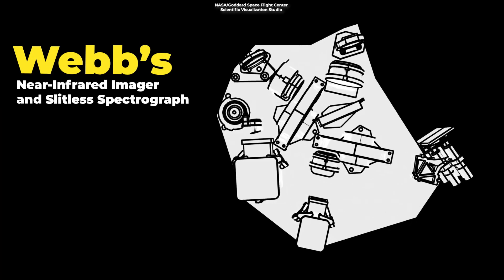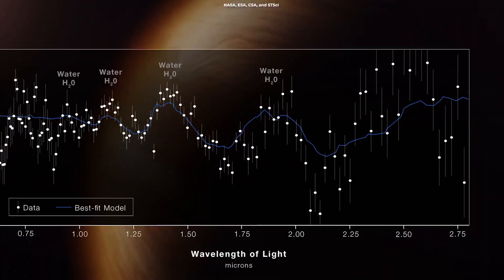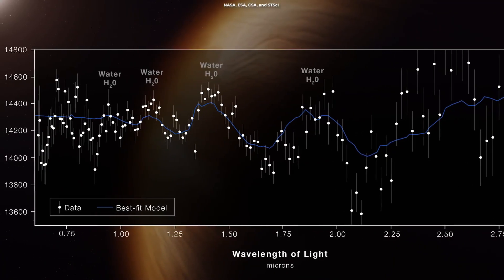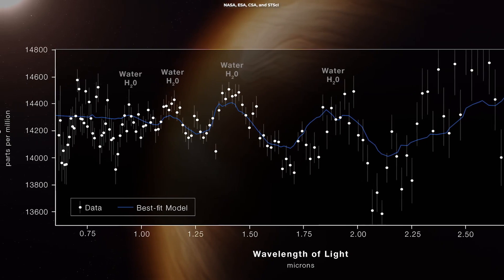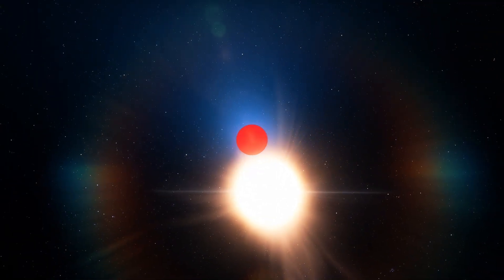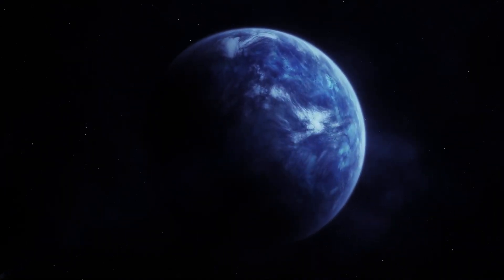On June 21, Webb's Near Infrared Imager and Slitless Spectrograph measured light from the WASP-96 system for 6.4 hours as the planet moved across the star. The result is a light curve showing the overall dimming of starlight during transit and a transmission spectrum revealing the brightness change of individual wavelengths of infrared light between 0.6 and 2.8 microns.